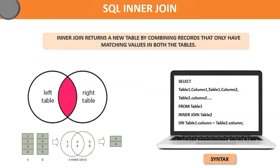Let us now understand the syntax of SQL inner join. The syntax is: SELECT table1.column1, table1.column2, table2.column2, and so on. FROM table1 INNER JOIN table2 ON table1.column = table2.column. Here, after the join expression, we mention the columns from which we want to match both the tables.